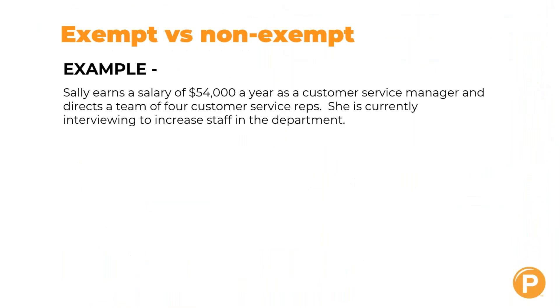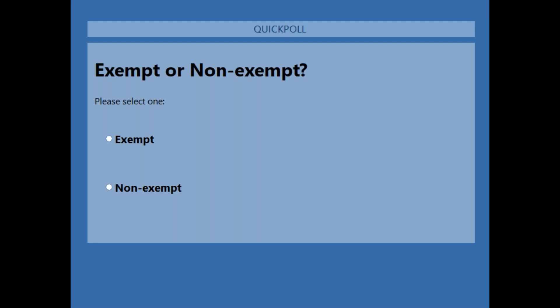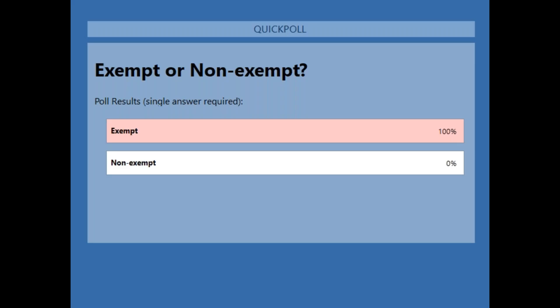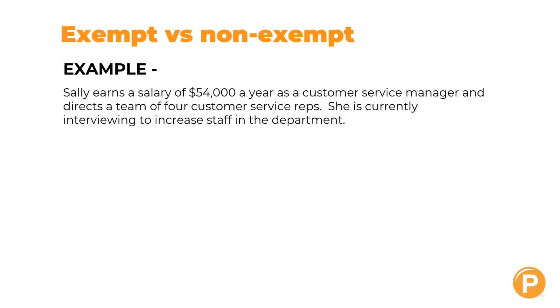Here's an example: Sally earns $54,000 a year, she's a customer service manager, and she has four customer service reps reporting to her. She is currently interviewing candidates to increase staff in her department. Based on a poll, everyone correctly identified her as exempt — she manages a department, supervises more than two employees, and is involved in hiring decisions.